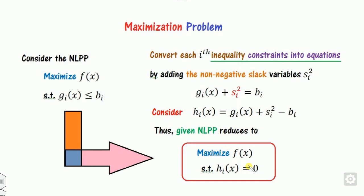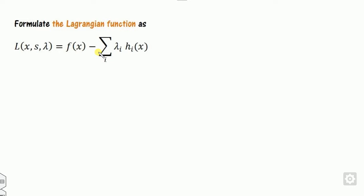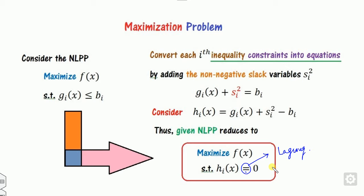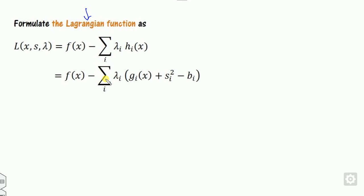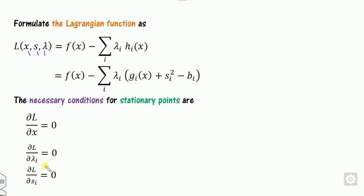So once you define the Lagrangian multiplier, that is f(x) minus of this, lambda is called as the Lagrangian multiplier and it is unrestricted in sign. Remember that whenever the constraints are equality sign, the corresponding Lagrangian multipliers are unrestricted in sign. So we substitute the value of h(x) into this. Once you define the Lagrangian multiplier, the necessary conditions depend on three parameters where the partial derivatives are zero. The partial derivative of L with respect to x is equation number one.